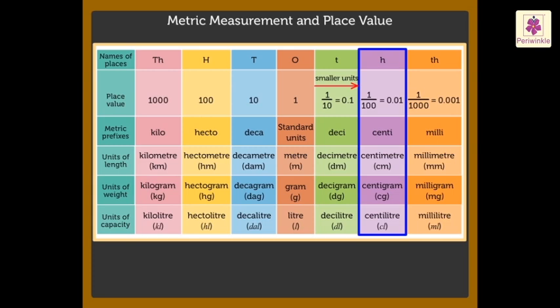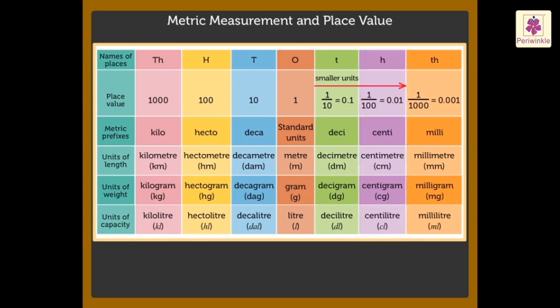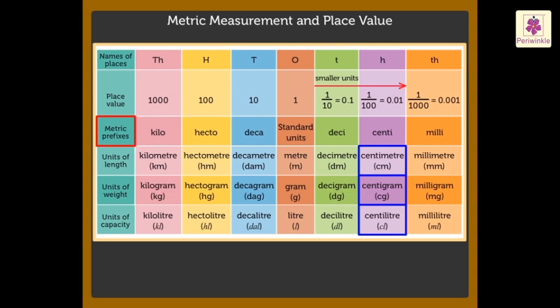The units in the hundredths column are one hundred times smaller than, or one-hundredth of, the standard units. We name these as centimeter, centigram, and centiliter, as the prefix centi means one-hundredth.